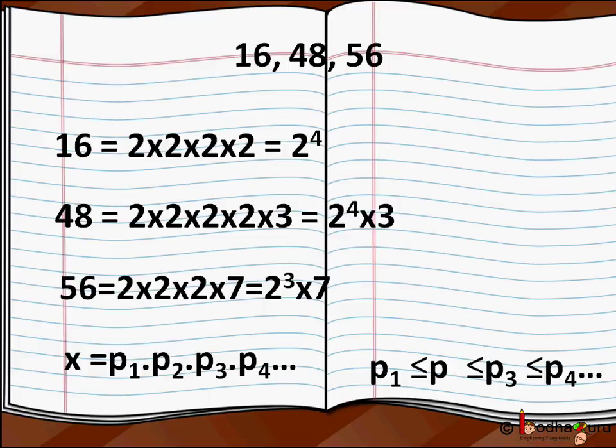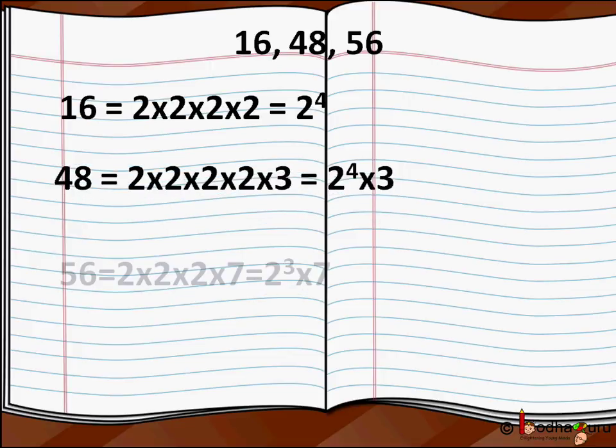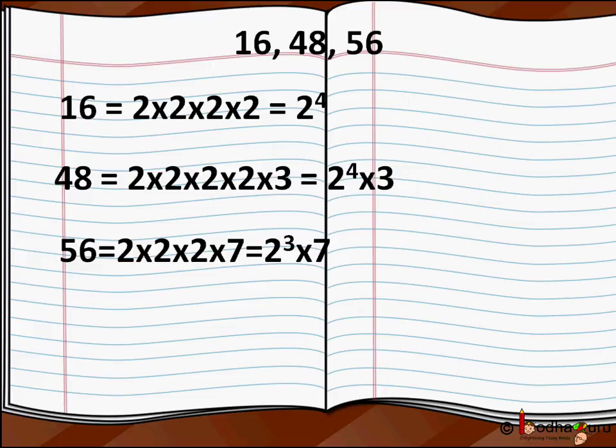So now we are finding the HCF. We take the common prime factors which are common in all the numbers. So we get in case of 16 which is 2^4, 48 which is 2^4 × 3, and 56 which is 2^3 × 7. We take the smallest power's common factor. Like for 2, the common factor between all the 3 and its smallest power is 3. So 2^3 is there in all the 3 values. So HCF of all the 3 numbers would be 2^3 = 8.